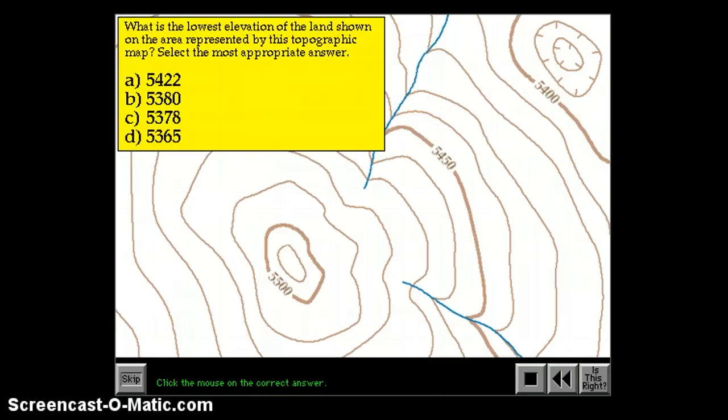We could also consider what's the lowest possible elevation. A trick for finding if you have a big map. This map is simple, but if you had a big map and you were looking for the lowest elevation, water runs downhill. So if we look at these rivers running this way, this way, we would expect lowest elevation to be somewhere in this area. Because remember the V's point upstream. So this is downstream. And our lowest elevation is going to be down in this closed depression. This is a 5400.